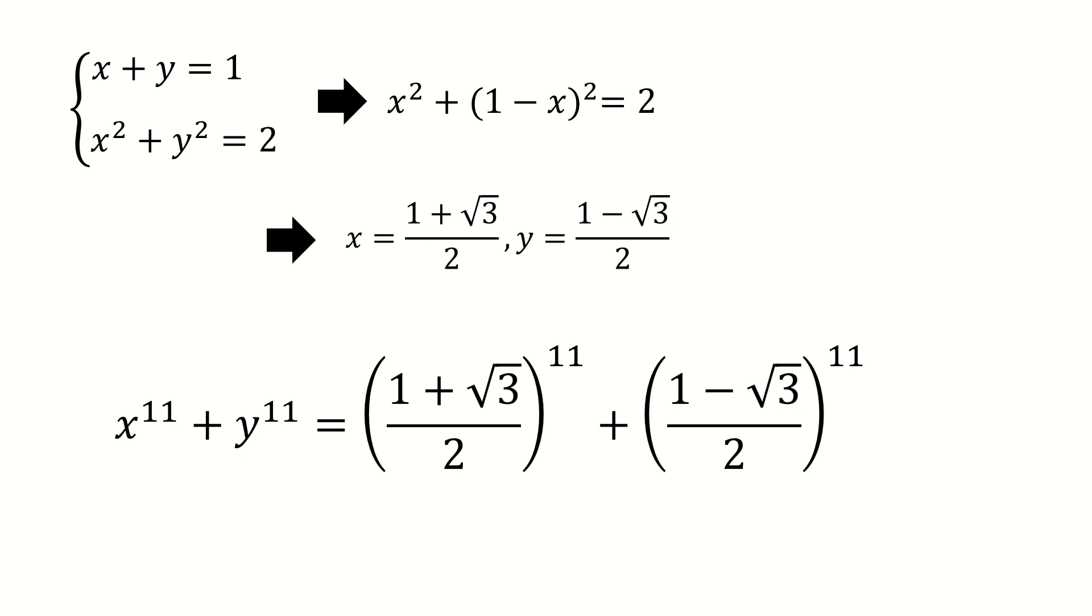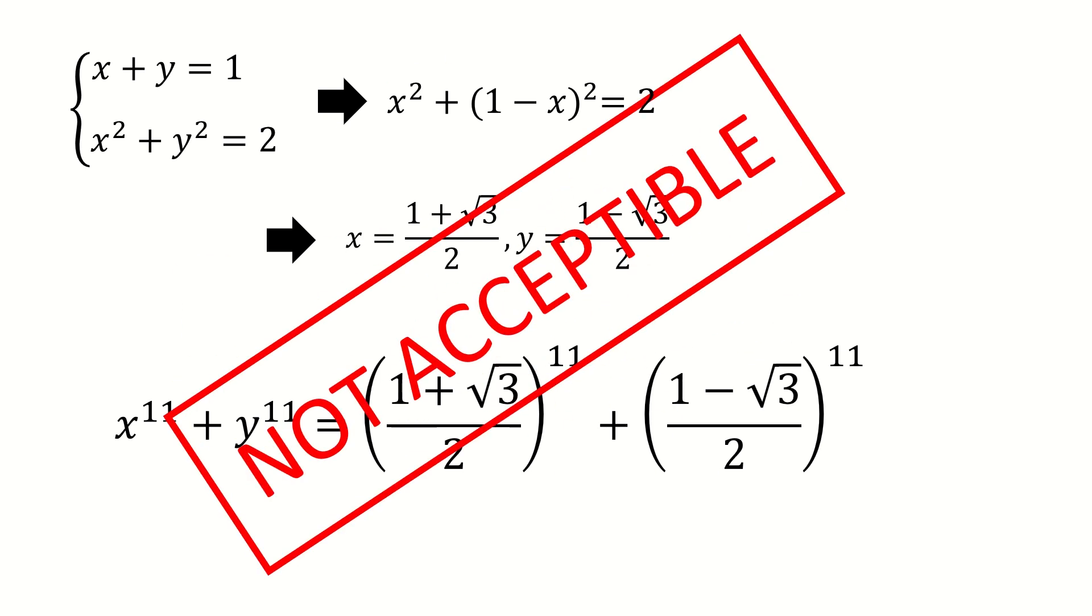This result is correct, but it's not acceptable because it's a practice problem for mathematical Olympiad. The final answer is a very simple fraction form, a rational number. Again, we will let it count down for 5 seconds. You can pause this video and give it a try. When you are ready, please keep watching.